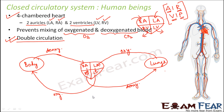Two circulations are happening simultaneously — one for oxygenated blood and one for deoxygenated blood — which is why this is called double circulation. The left auricle and left ventricle always deal with oxygenated blood; the right auricle and right ventricle always deal with deoxygenated blood. The two types of blood never mix. Blood flow takes place only inside blood vessels, which we will learn about a little later.